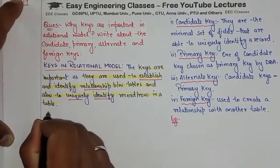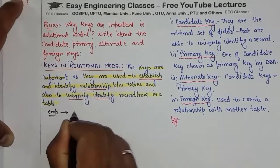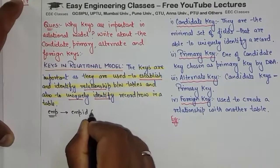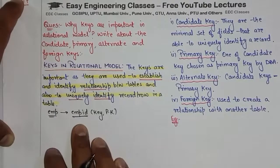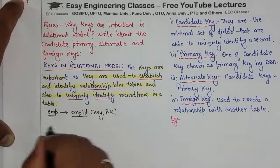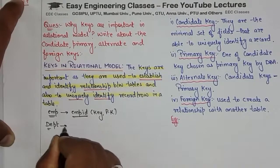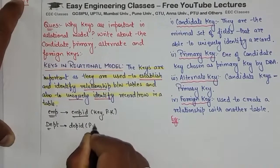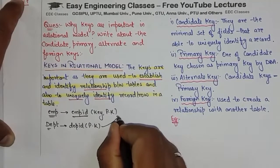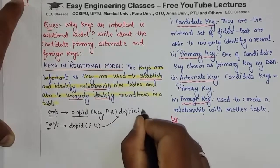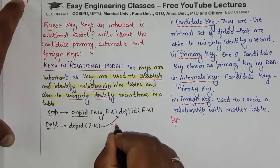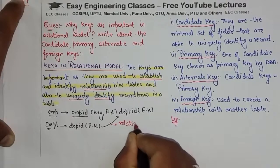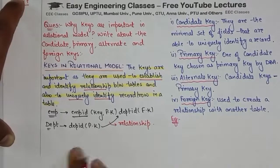Now let me show you an example. Employee table ki baat karte hain — is mein jo employee ID hoti hai, yeh ek key hai, basically yeh primary key hai. Ab 2 employees ka employee ID same nahi hoga, toh yeh uniquely identify karne ka kaam kar rhi hai. Aise hi agar employee aur department 2 tables lete hain, toh department ki department ID hoti hai jo ki us table ki primary key hai, wo use hoti hai employee table mein as foreign key. Toh key kya kar rhi hai — establish kar rhi hai ek relationship ko.